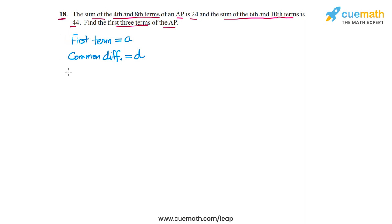The two pieces of information given to us: the first one is 4th and 8th terms, their sum is 24. So we can write this as T4 plus T8 equals 24.